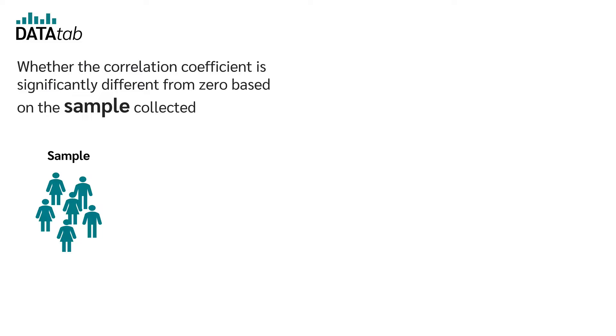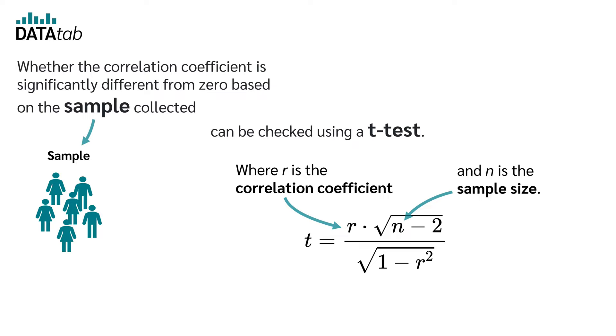Whether the correlation coefficient is significantly different from 0 based on the sample collected can be checked using a t-test, where r is the correlation coefficient and n is the sample size.